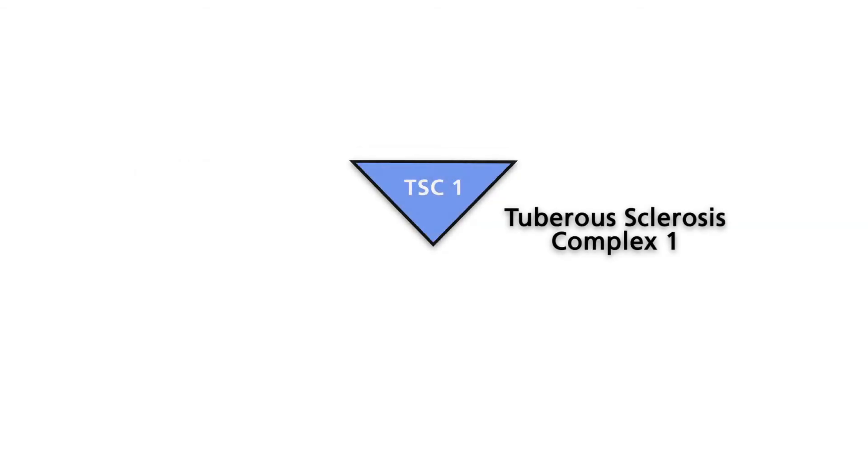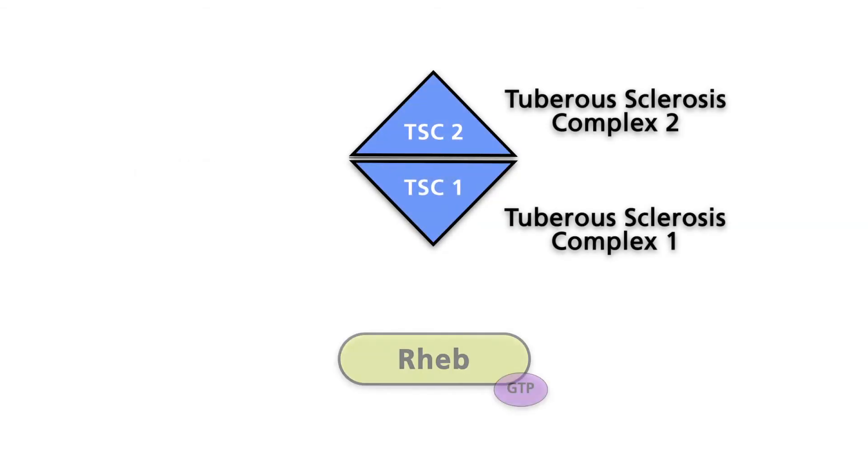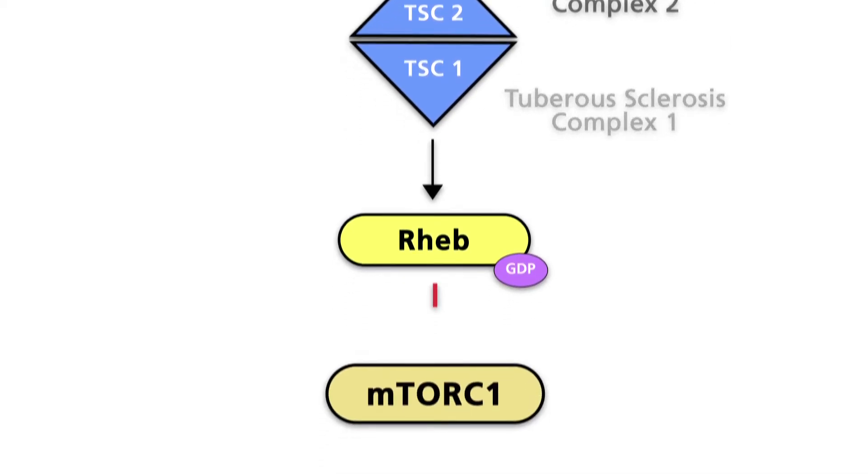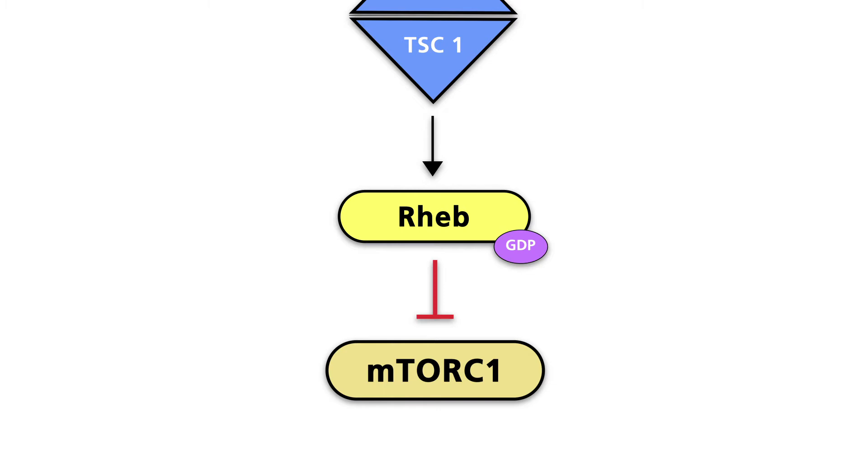A complex of two proteins, TSC1, short for tuberous sclerosis complex 1, and TSC2, acts as a GTPase activating protein for Rheb. In its GDP-binding form, Rheb is no longer able to activate mTOR complex 1.